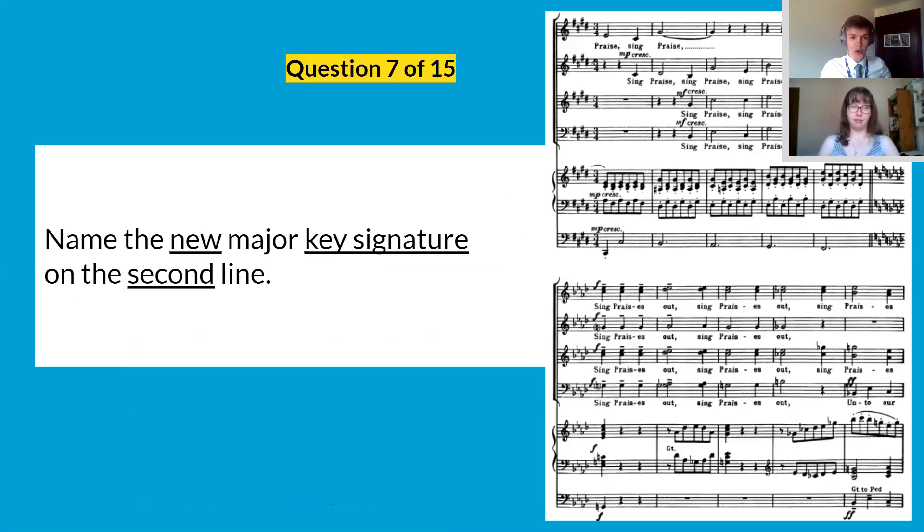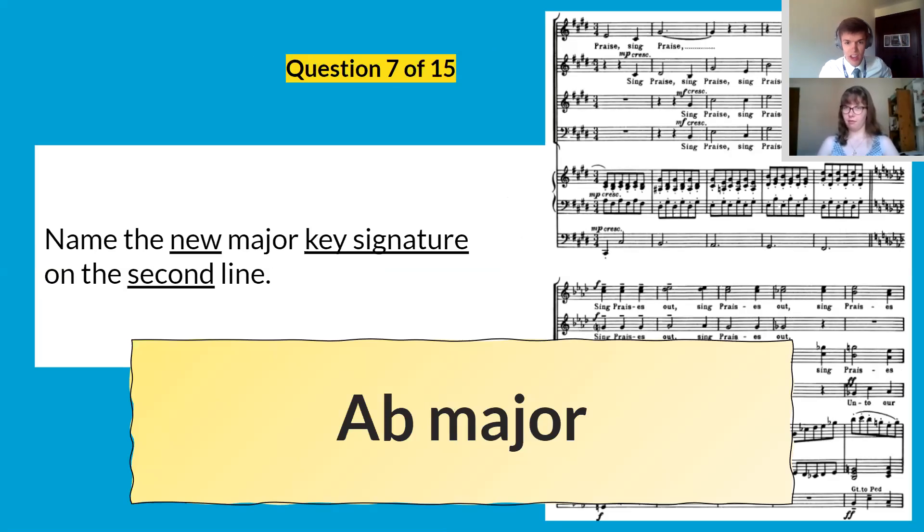Question number seven, name the new major key signature on the second line. So same sort of bit of the page, it's got four flats so it's A flat major. So that's not a key signature that really comes up at grades one or two, but if you know the rule for working out what major flat key signatures are then you should be fine with that because remember it's the second to last flat which is A.